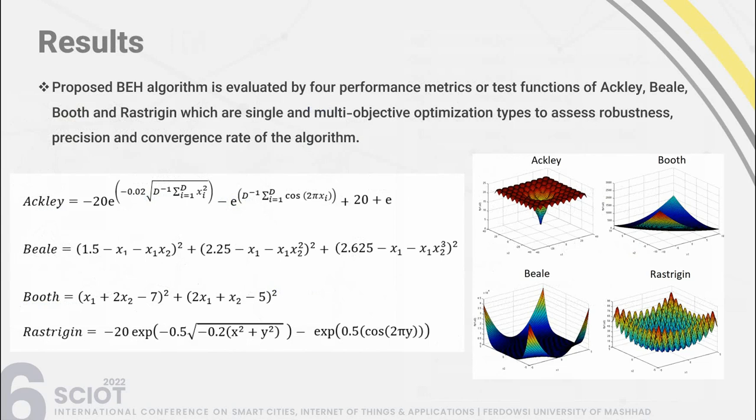The proposed BEHA algorithm is evaluated by four performance metrics or test functions: Ackley, Beale, Booth, and Rastrigin, which are single and multi-objective optimization types used to assess robustness, precision, and convergence rate of the algorithm. The 3D models of these functions are shown on the right and their equations on the left.